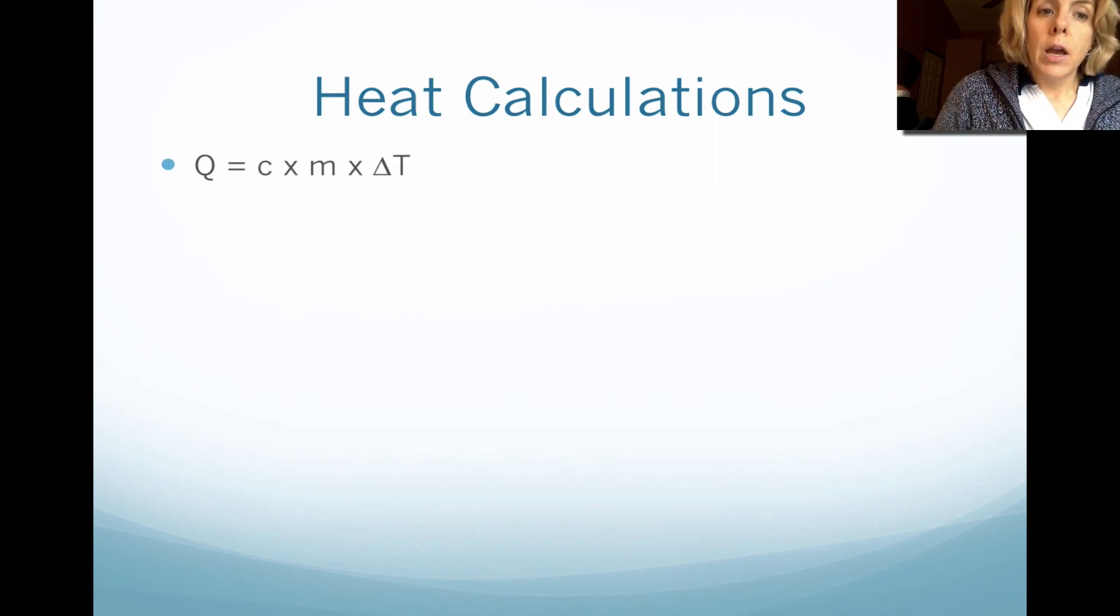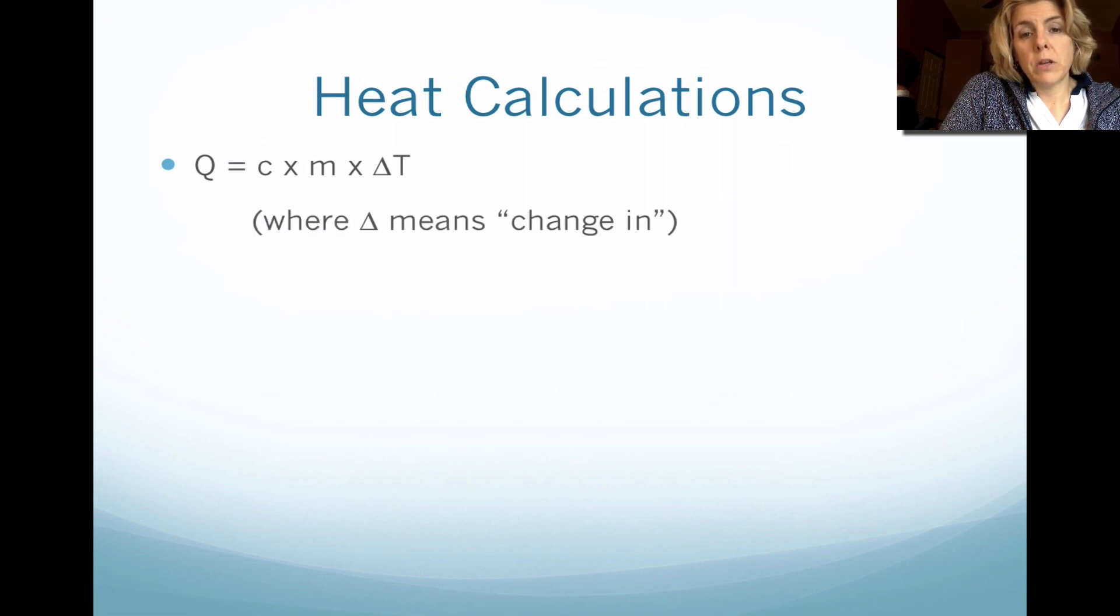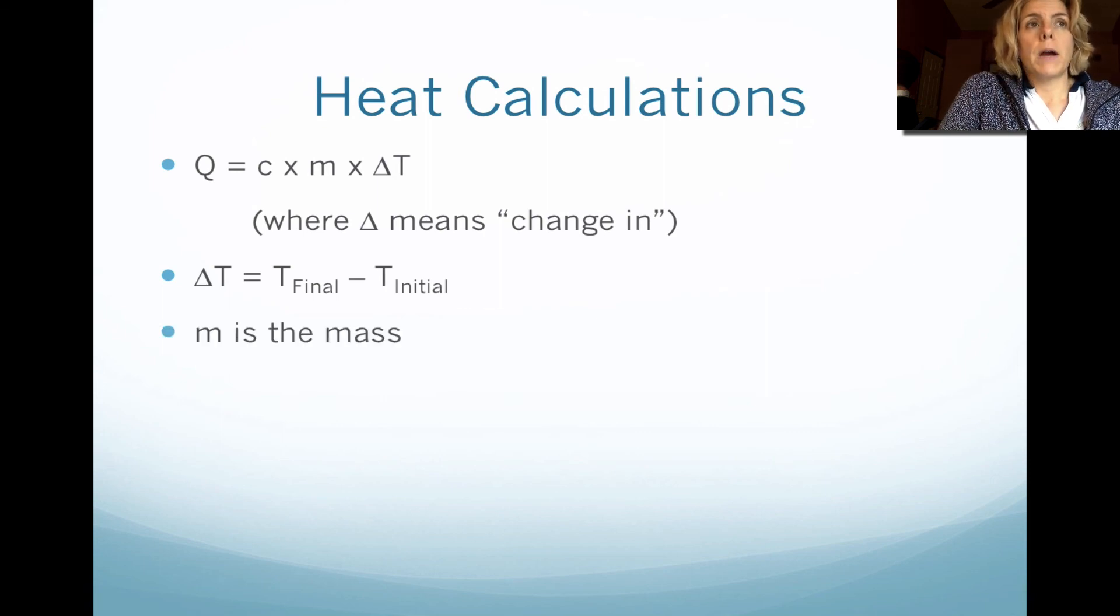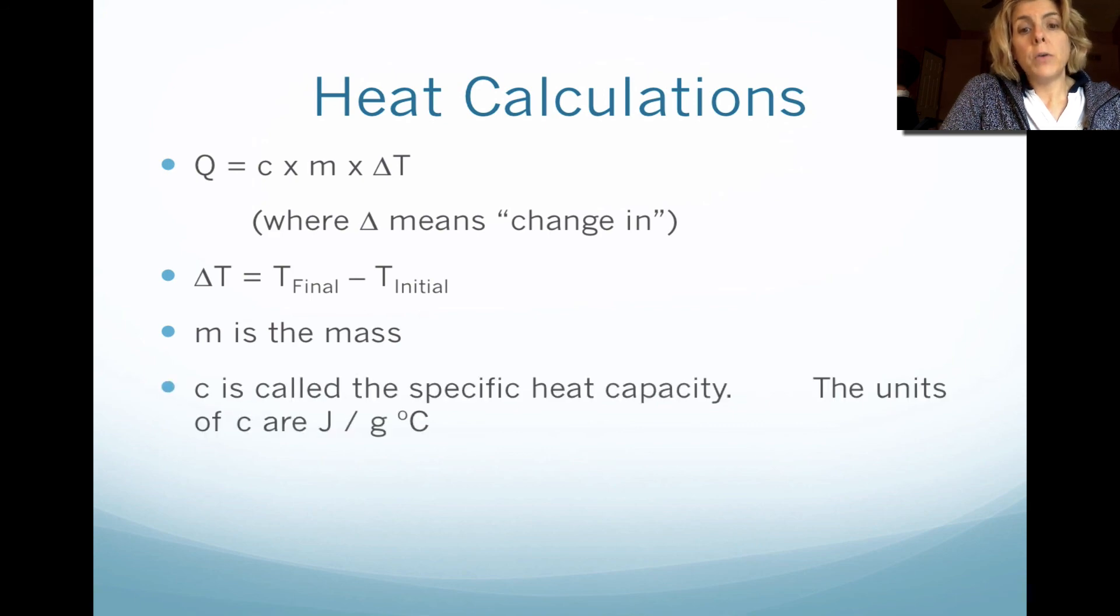How do we calculate heat? We look at Q, which is heat. We're going to multiply it by C, which is specific heat, times mass times delta T. That means T final minus T initial. So M is whatever object we are measuring, and that has to be in grams. And then you have to be given specific heat, and specific heat typically is joules divided by grams times Celsius.